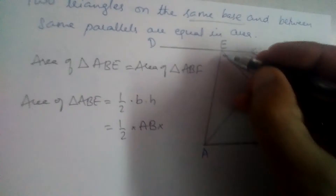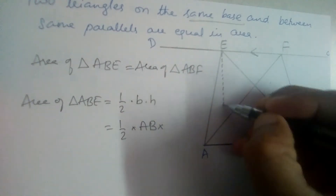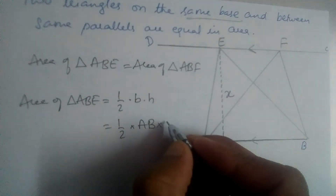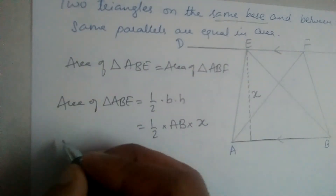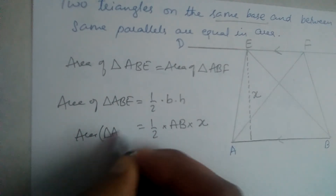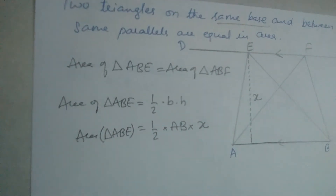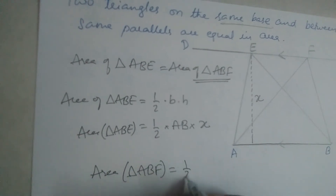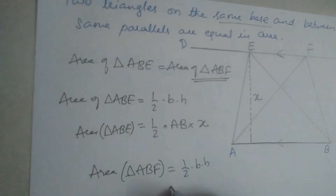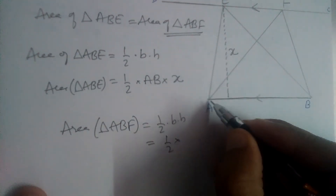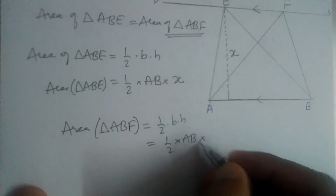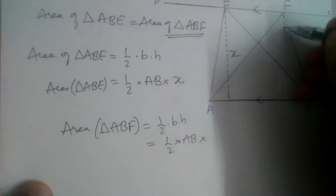The height is not known, so if we drop a perpendicular, let us say the height is X. So the area of triangle ABE is half into AB into X. Now let us find the area of triangle ABF — it will also be half into base into height, where AB is the base again.